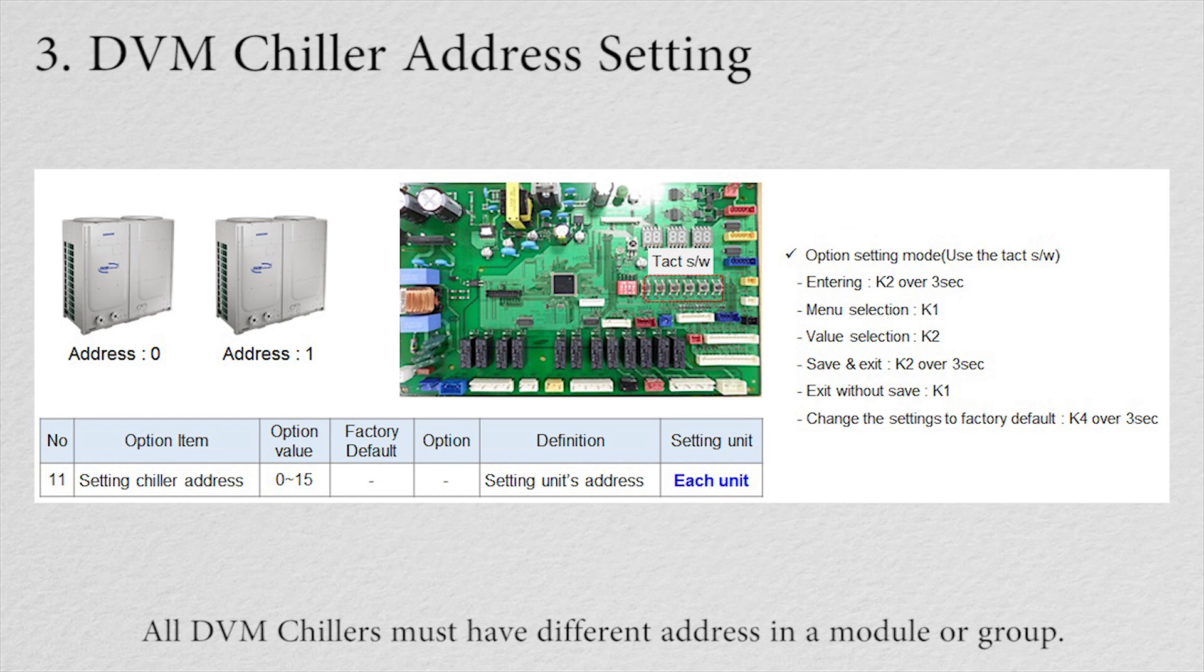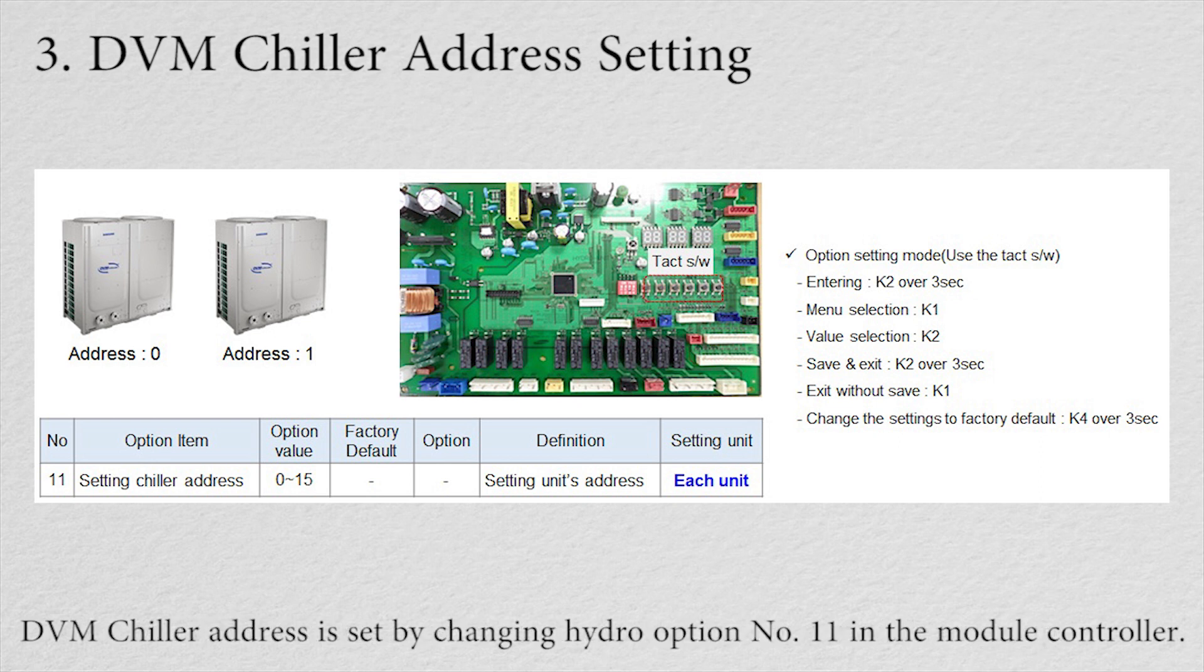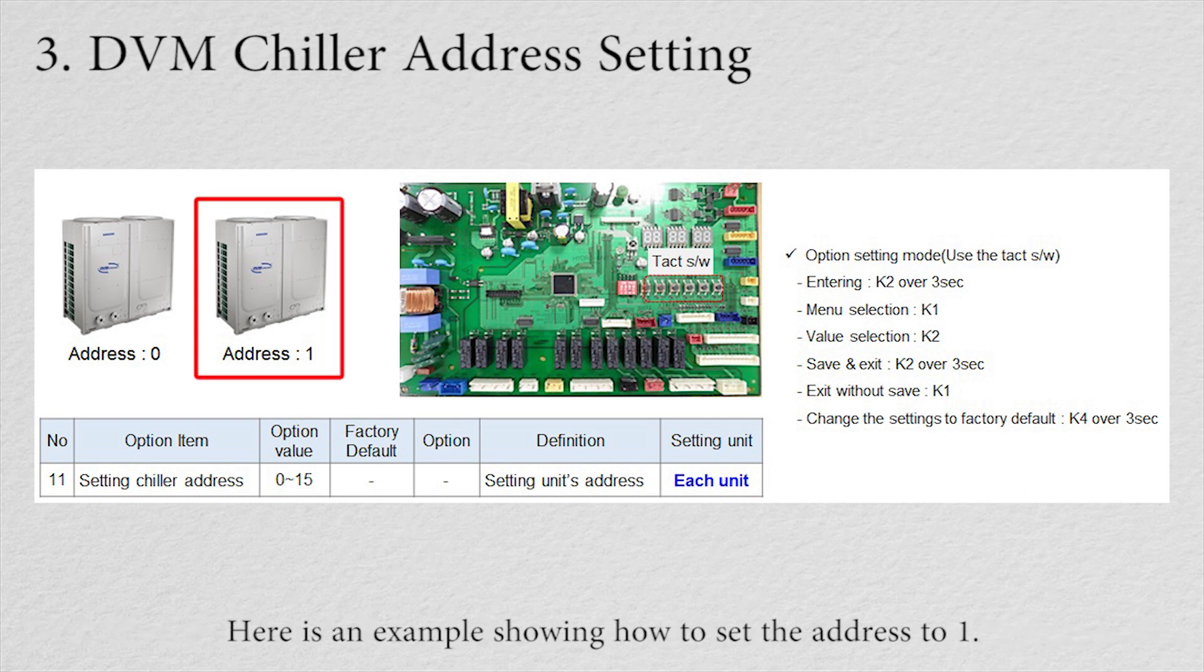Let's review how to set the DVM chiller's address. All DVM chillers must have different addresses in a module or group. The DVM chiller address is set by changing hydro option number 11 in the module controller. Here is an example showing how to set the address to 1.